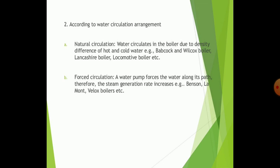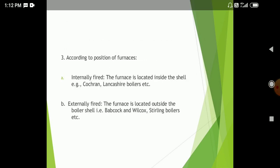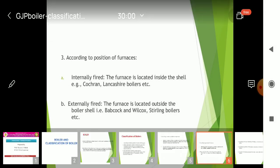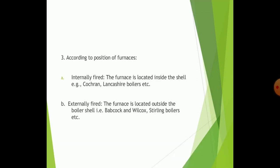According to the position of the furnace: internally fired boilers are those in which the furnace is located inside the shell — for example, Cornish and Lancashire boilers. In externally fired boilers, the furnace is located outside the boiler shell — for example, Babcock and Wilcox boilers.